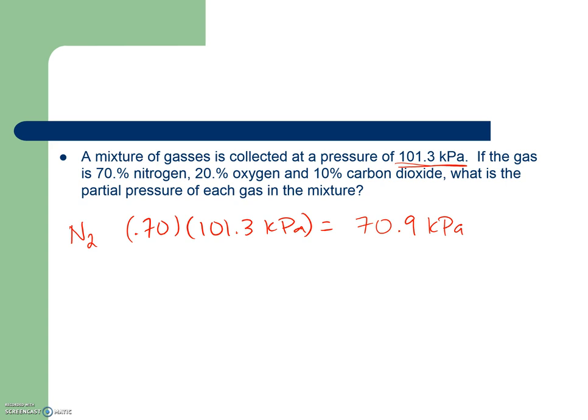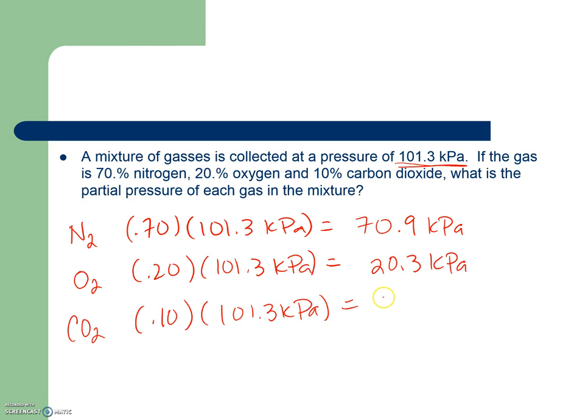That's 20% oxygen, so that's O2. So that's 0.20 times that 101.3 as the total pressure, and 0.2 gives me 20.3. And then carbon dioxide, CO2, is 10% of the 101.3 kilopascals, and so that's going to be 10.1 kilopascals.